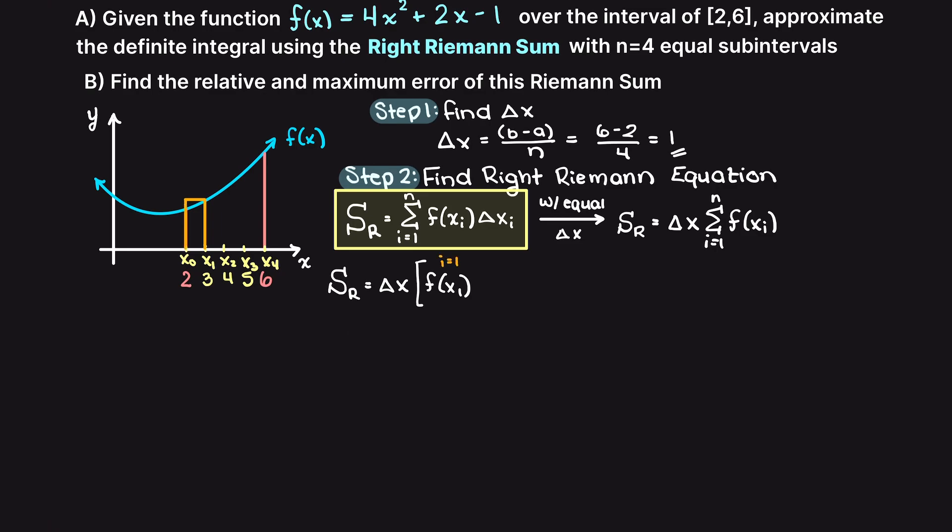So if you were to expand this here, you would have delta x times f of xi, or f of x1 here, which is going to be this first rectangle we just drew.